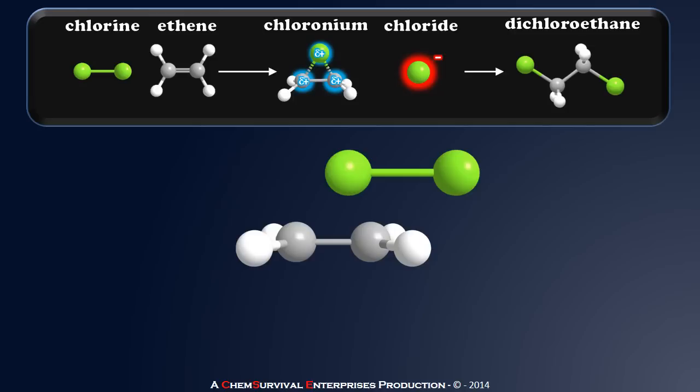So what happens in this case is the pi electrons from that ethene molecule are going to attack the chlorine. And because of its polarizability, as they begin to attack, the electrons on the chlorine gas molecule are going to try to run to the other side to get away from the attacking pi electrons from the alkene. And this creates a dipole, which ultimately results in the bond breaking.